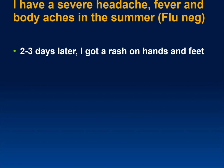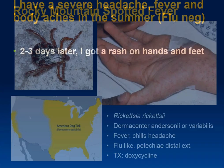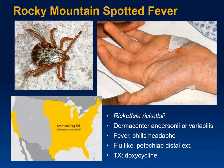Here's a person with severe headache, fever, and body aches in the summer who is flu-negative. Two to three days later, they develop a rash on their hands and feet. When thinking of rashes on the hands, consider Rocky Mountain spotted fever, which typically appears about three days after initial symptoms. It's actually not a good sign when the rash appears with RMSF.